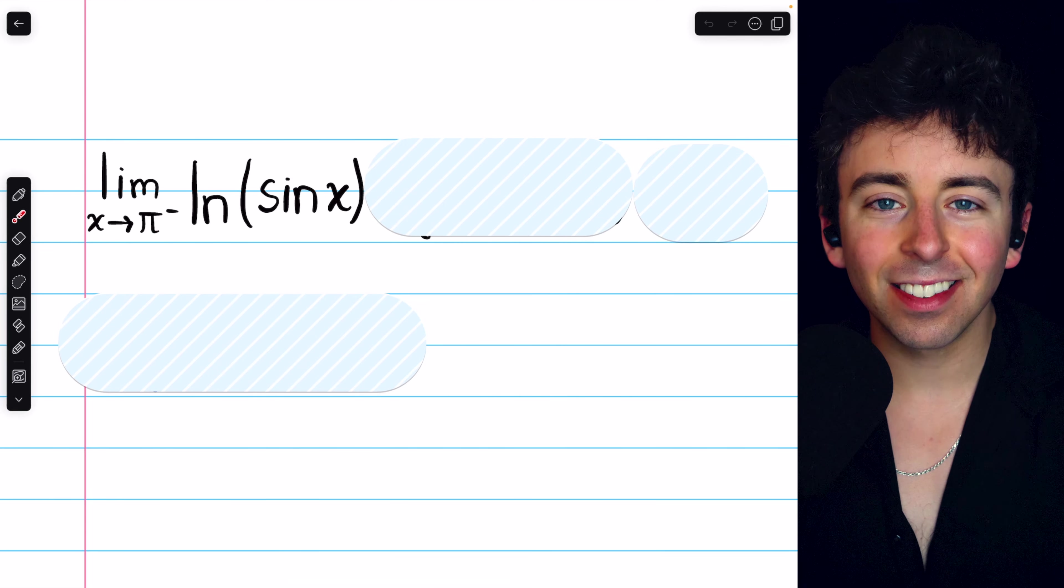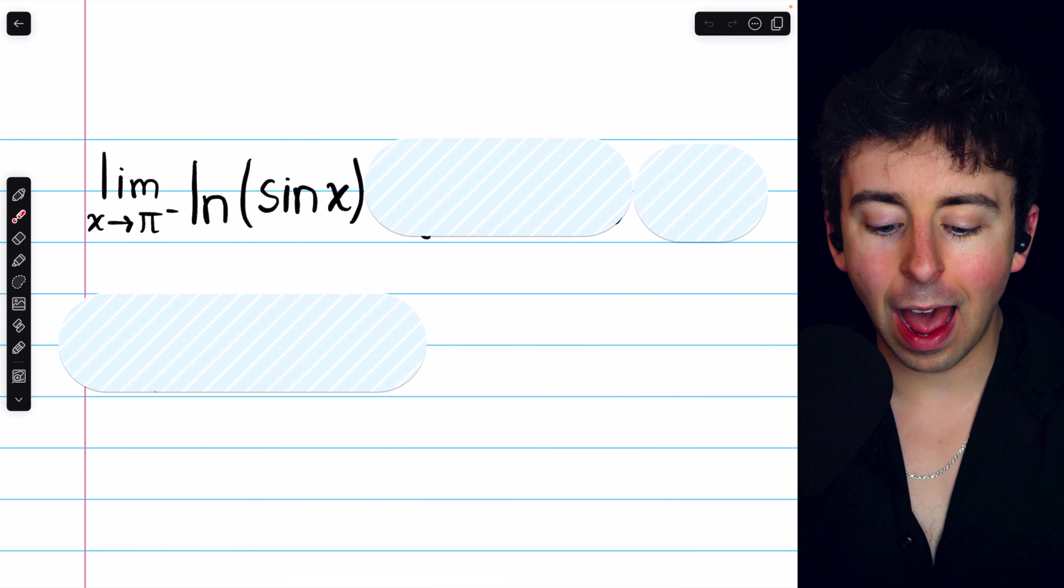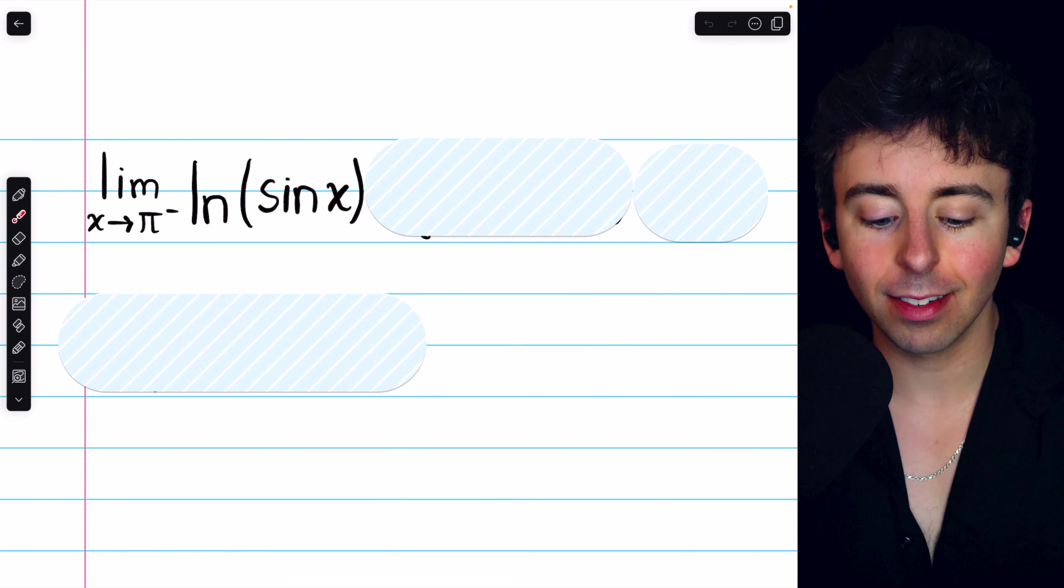To find the limit of the natural log of sine x as x approaches pi from the left, it's perhaps best to first ask, what's happening to sine x as x approaches pi from the left?